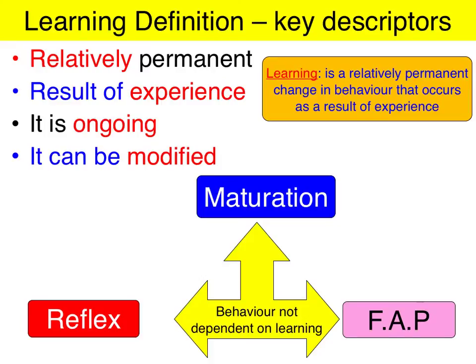Before we talk about that, let's first define what we mean by learning, which is a relatively permanent change of behaviour that occurs as a result of experience. Learning is an ongoing process — if you think about our acquisition and understanding of language — and it can be modified. For instance, we might develop a phobia as a child of dogs, and if we're regularly exposed to dogs, we can gradually unlearn that fear. A key point of the learning definition is experience. Reflexes, maturation, and fixed action patterns — none of these types of behaviour require experience.